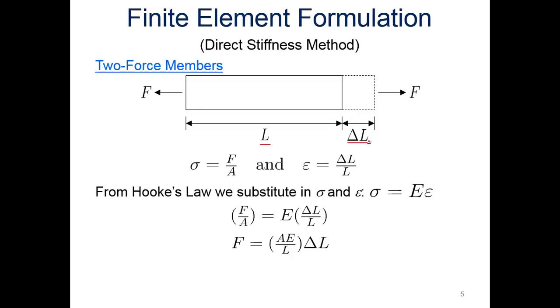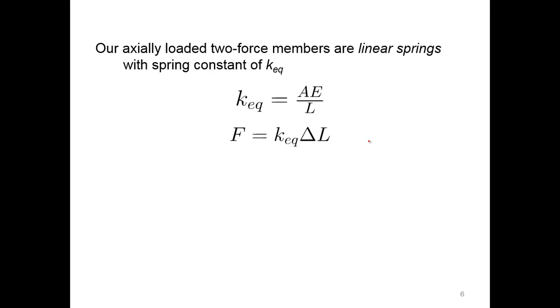Solving for the force, we get AE over L, and as we looked in the previous lecture, that's analogous to our spring, our linear spring. So F is equal to K times delta. Our K equivalent for a two-force axial loaded member is AE over L, and we can substitute our K for our AE over L for our stiffness of our member.